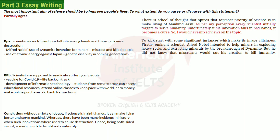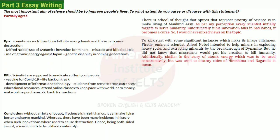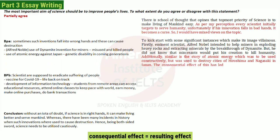Now we include a second point with the connector 'additionally': 'Similarly is the story of atomic energy, which was to be used constructively but was used to destroy cities of Hiroshima and Nagasaki in Japan.' Along with this, to show how it affected people's lives, we add: 'The consequential effect of this has led to genetic deformation in many coming Japanese generations.' With this we have ended our first body paragraph.